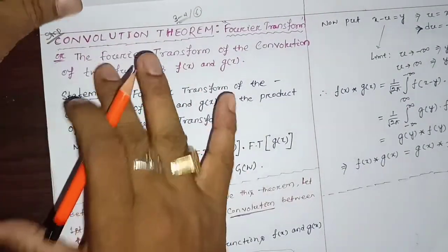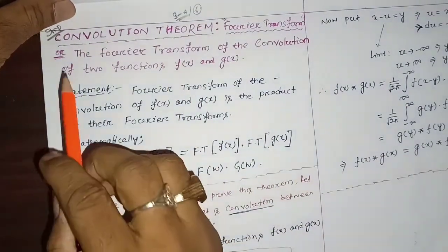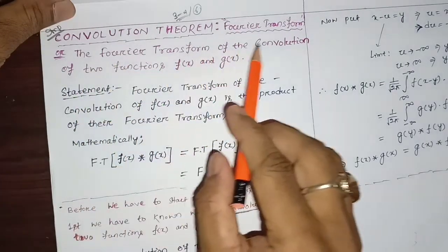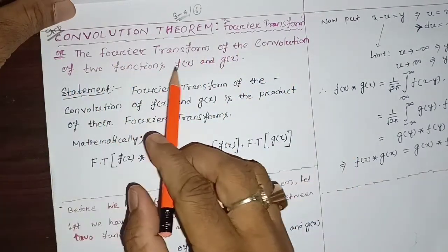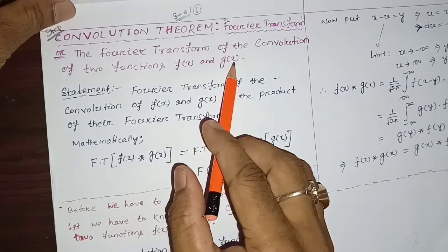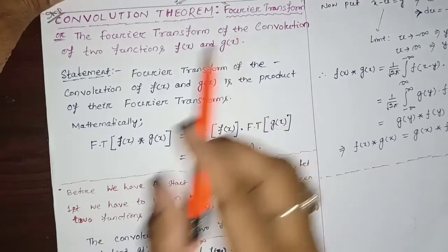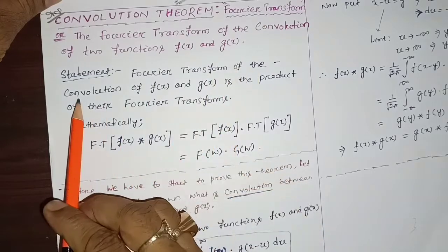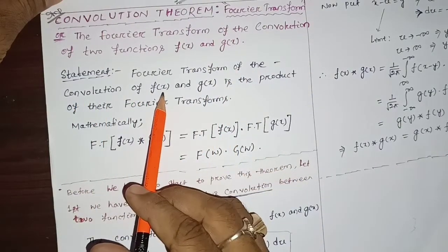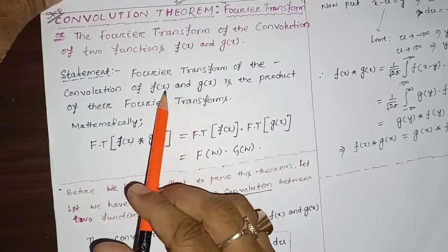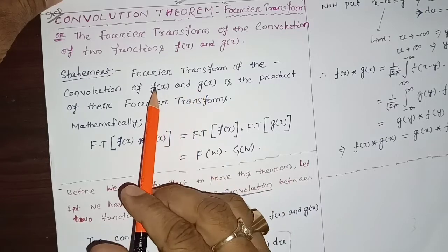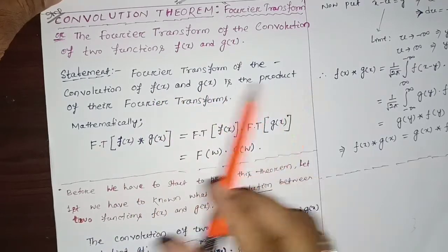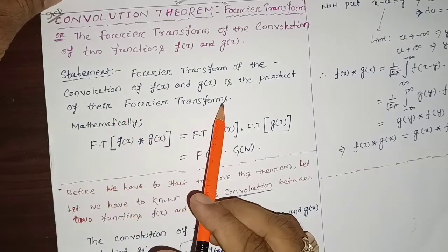It is always important. The Fourier transform of the convolution of two functions f(x) and g(x) — the statement is that the Fourier transform of the convolution of f(x) and g(x) is the product of their Fourier transforms.